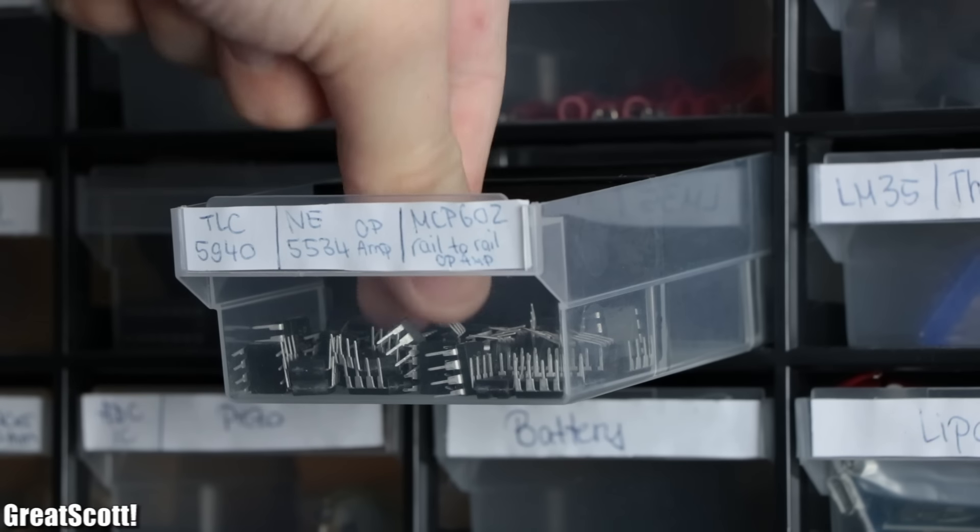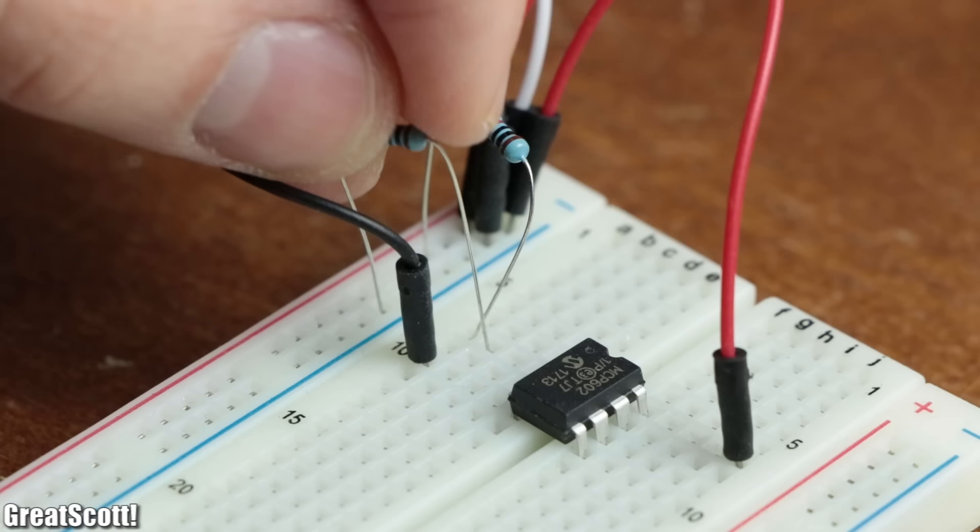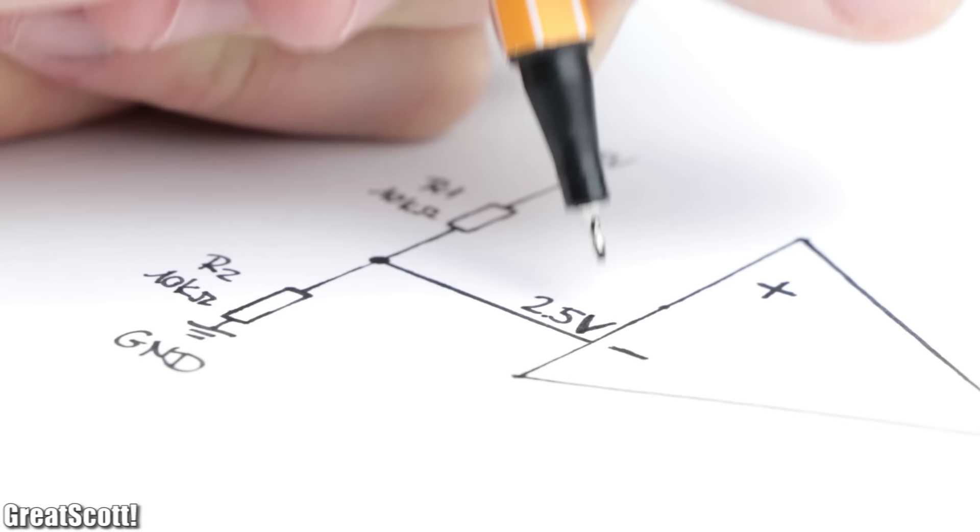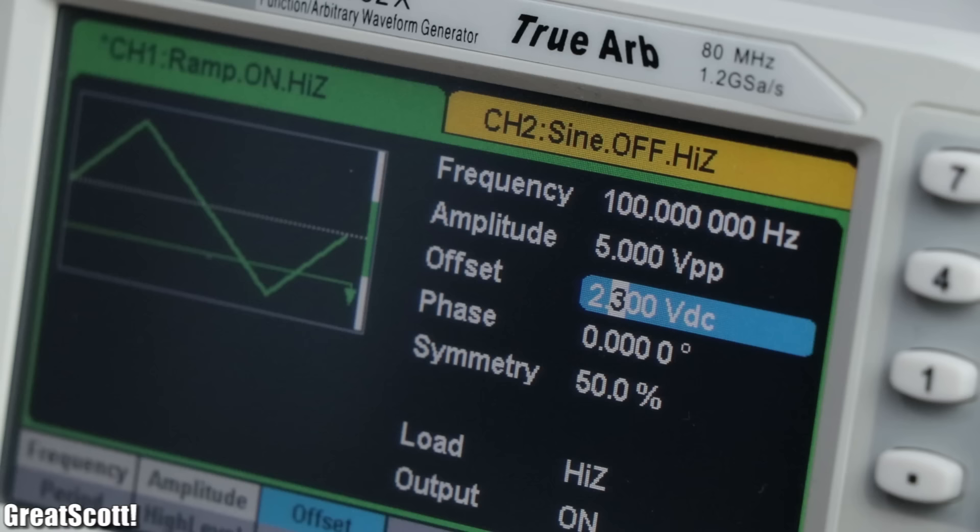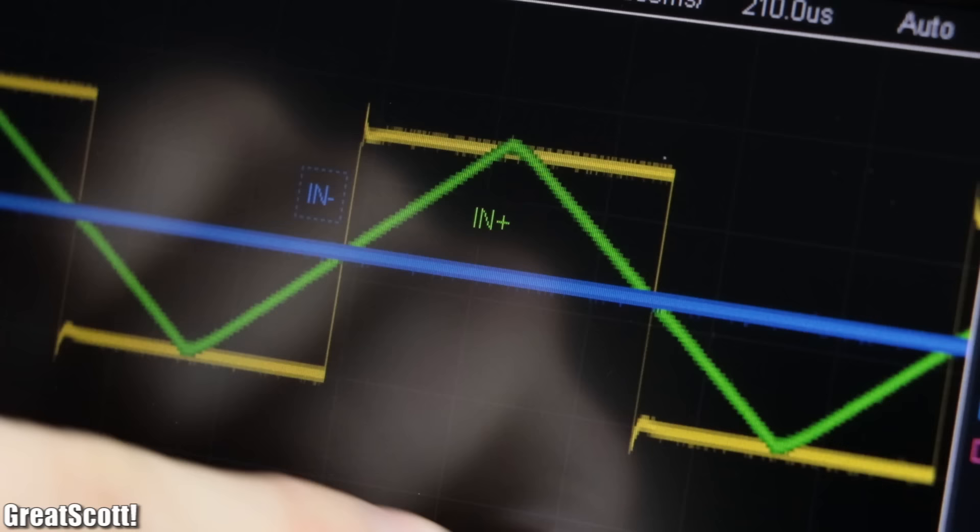As you might know, when we use an operational amplifier in a circuit by connecting a voltage reference of, for example, 2.5 volts to its inverting input and a triangle voltage between 0 and 5 volts to its non-inverting input, then the op-amp would create a square wave on its output.